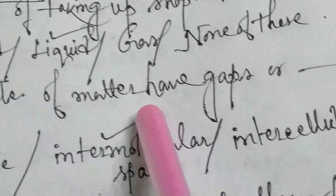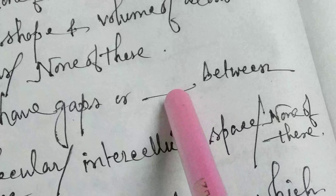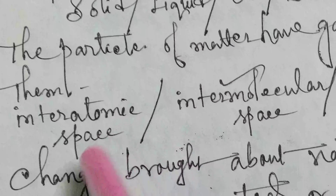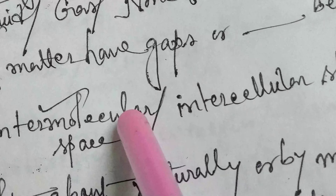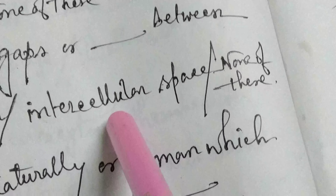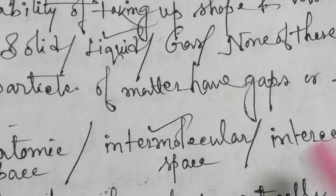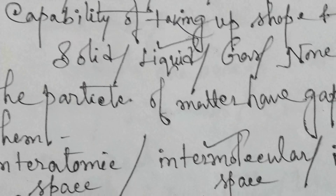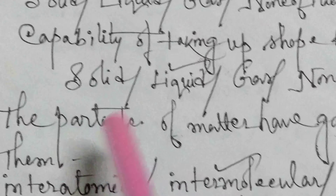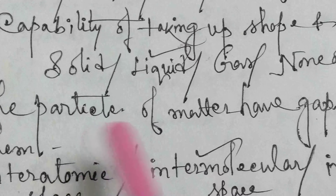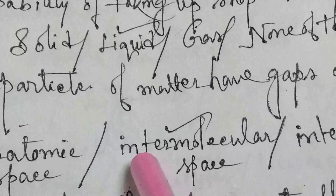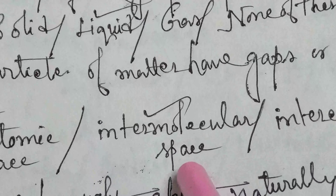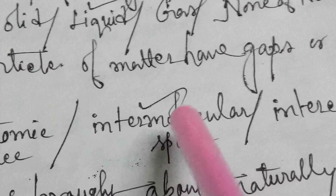The particles of matter have gaps between them called: inter-atomic space, inter-molecular space, inter-cellular space, or none of these. The answer is inter-molecular space, because any particle consists of smaller particles and there is an inter-molecular space between them.